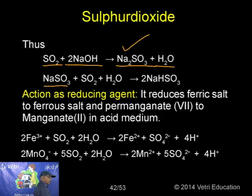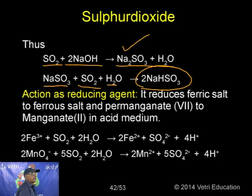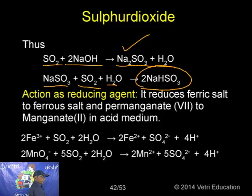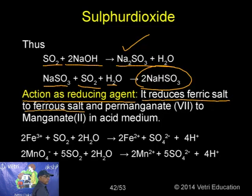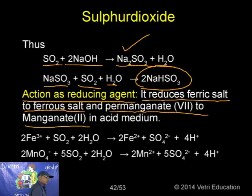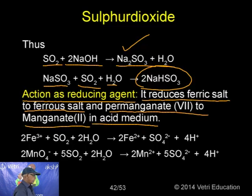Sulphur forms numerous allotropes. The most important are yellow rhombic sulphur (alpha) and monoclinic sulphur (beta). Alpha sulphur is stable below 369 K, and transforms into beta sulphur above 369 K. Both rhombic and monoclinic sulphur have S₈ molecules.